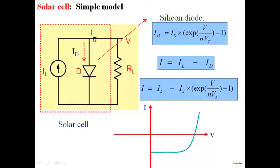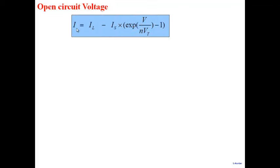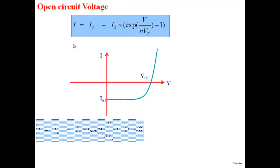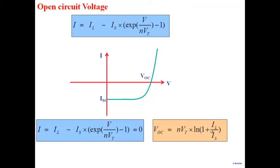A P-N junction under light is a usual diode with a current source in parallel. From the equation I = IL − IS·exp(V/NVT) − 1, the short circuit current ISC equals IL, the photo-generated current. The open circuit voltage VOC = N·VT·ln(1 + IL/IS).